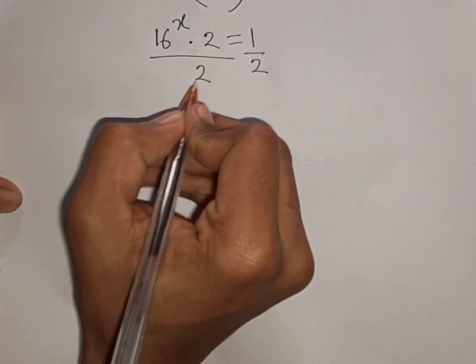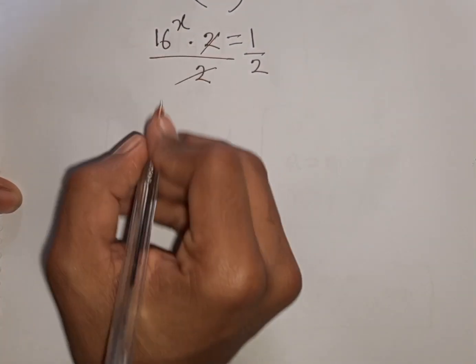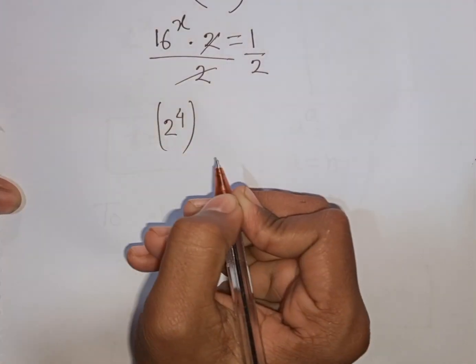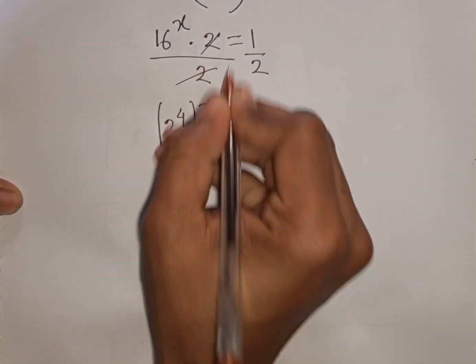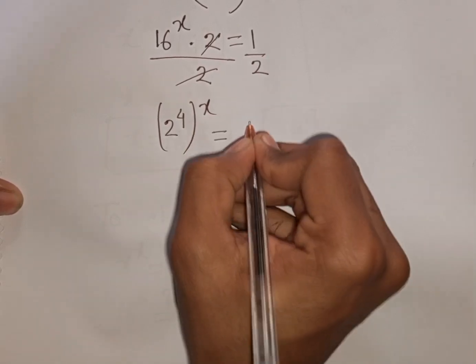Now we see the 2s will cancel. We have 16^x which can be written as (2^4)^x equals 1/2.